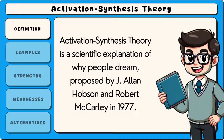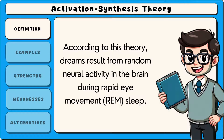Activation synthesis theory is a scientific explanation of why people dream, proposed by J. Allen Hobson and Robert McCarley in 1977. According to this theory, dreams result from random neural activity in the brain during rapid eye movement, REM sleep.